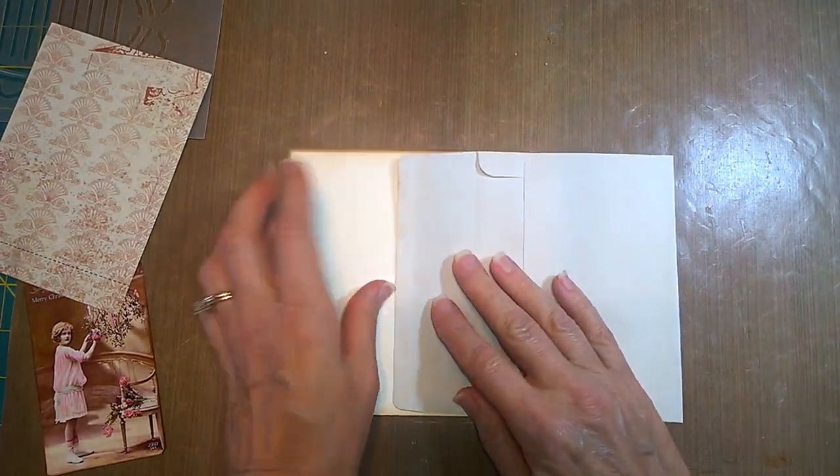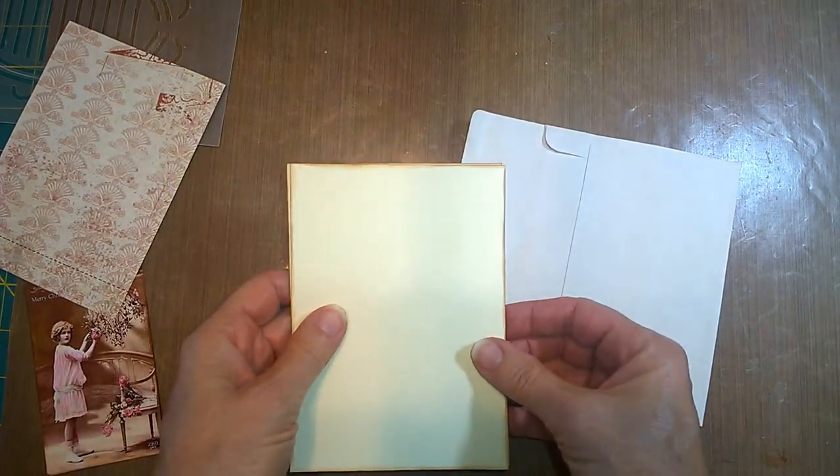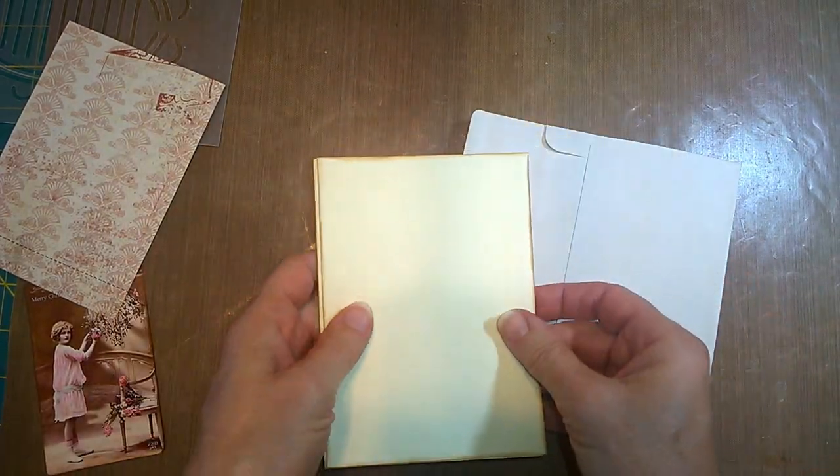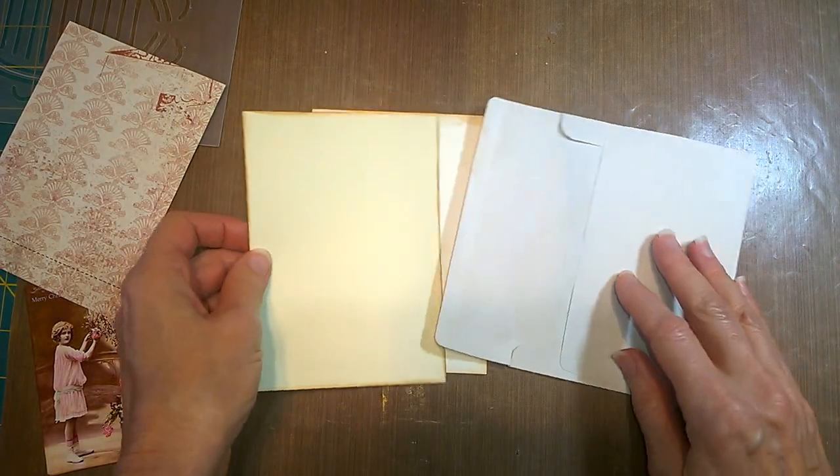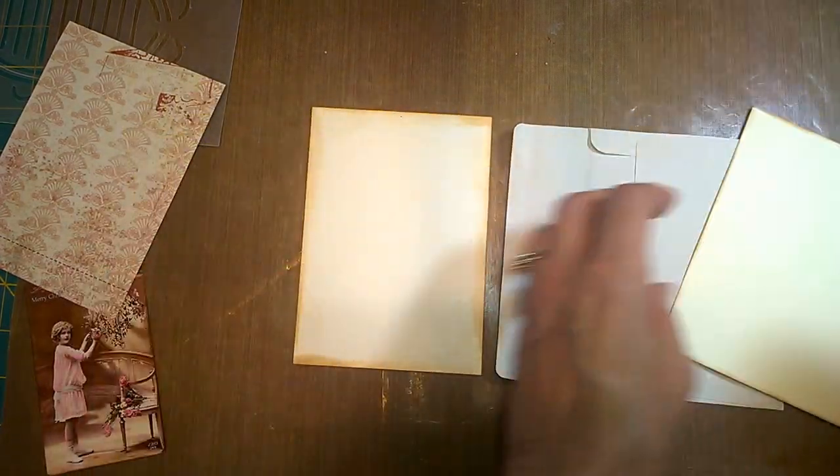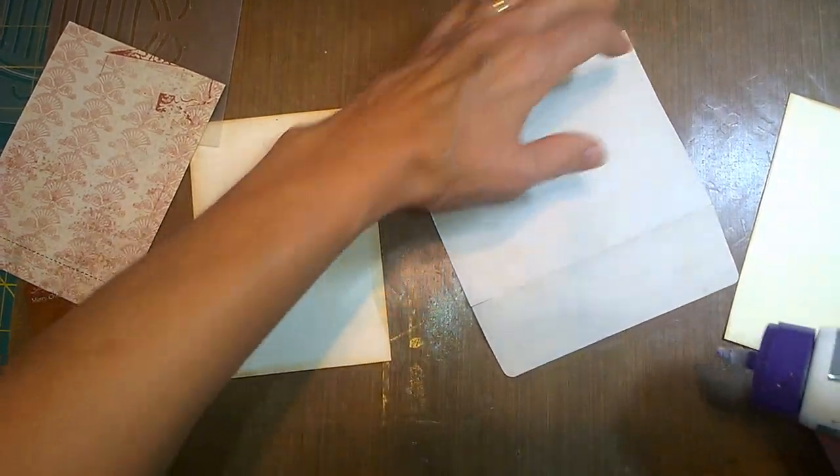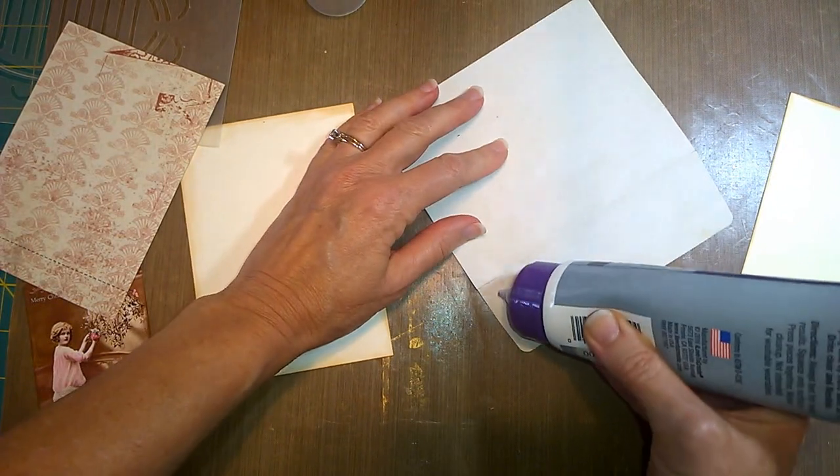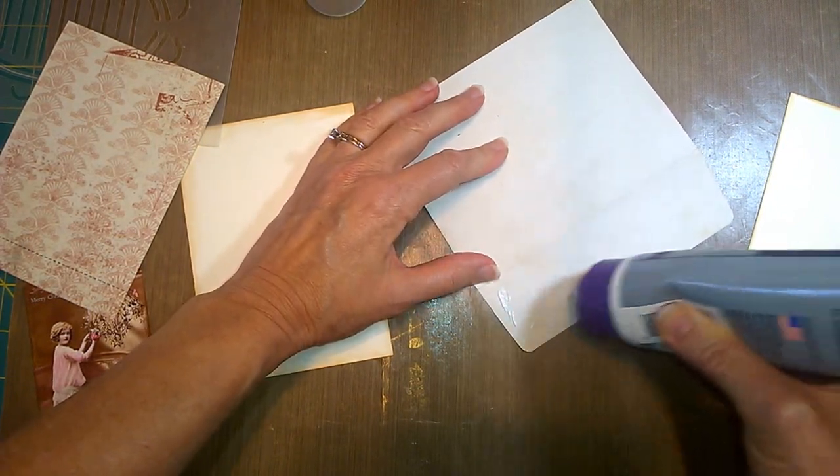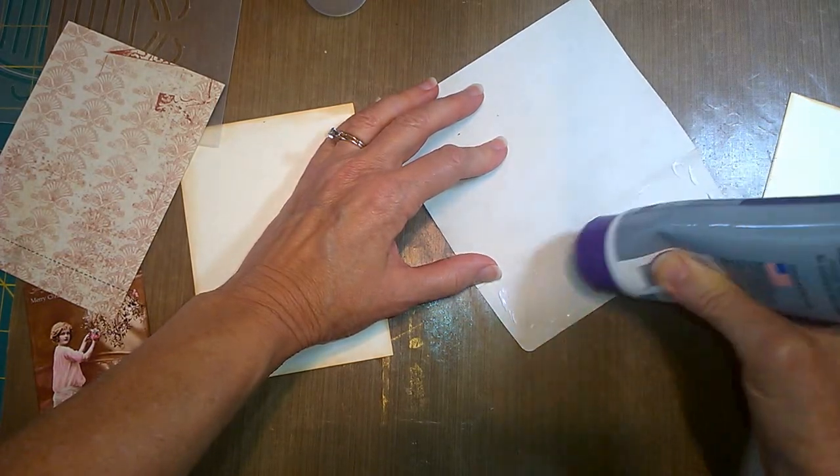And then for the backing, I just took another piece of card stock that was the same size as that particular little card there. So the first thing I'm going to do is I'm going to glue this envelope onto the card on the flat part.